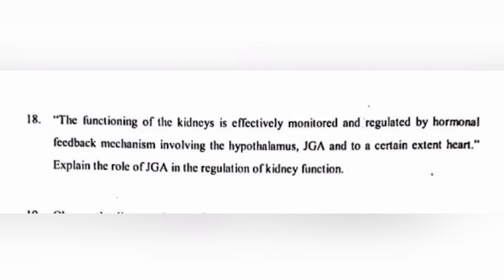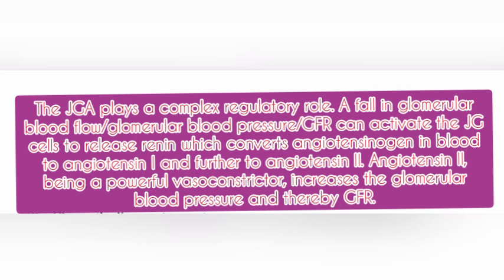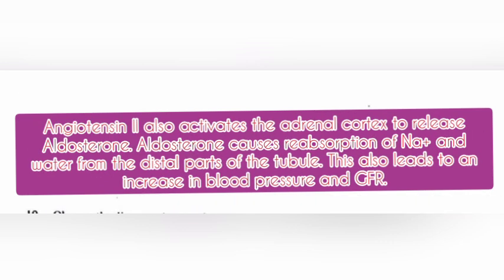Question 18. The functioning of the kidneys is effectively monitored and regulated by a hormonal feedback mechanism involving the hypothalamus, JGA, and to certain extents the heart. Explain the role of JGA in the regulation of kidney function. Answer: The JGA plays a complex regulatory role. A fall in glomerular blood flow or glomerular blood pressure or GFR can activate the JGA cells to release renin, which converts angiotensinogen in blood to angiotensin 1 and further to angiotensin 2. Angiotensin 2, being a powerful vasoconstrictor, increases the glomerular blood pressure and thereby GFR. Angiotensin 2 also activates the adrenal cortex to release aldosterone. Aldosterone causes reabsorption of Na+ and water from the distal parts of the tubule, leading to an increase in blood pressure and GFR.